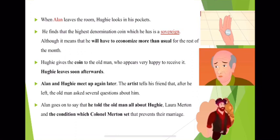Then Alan revealed to Hughie that the old man he had been painting was Baron Hausberg — not a beggar, but one of the wealthiest men in Europe and someone who often bought Alan's paintings. Alan explained that the man posing as a model was actually the wealthiest man in Europe; he had a house in every capital and could even stop Russia going to war — that was the extent of his influence. The old man in the studio was Baron Hausberg, a great friend of Alan, and he himself had ordered Alan to paint him as a beggar.